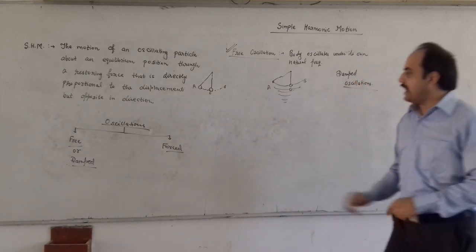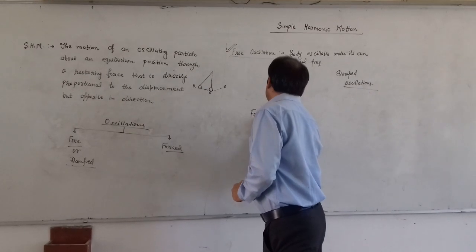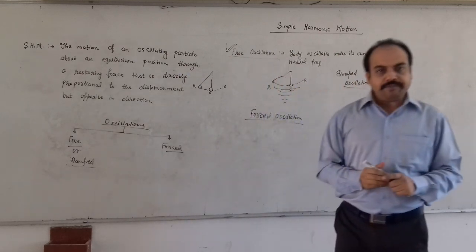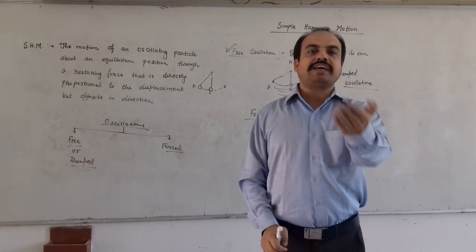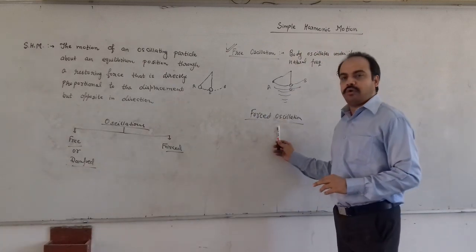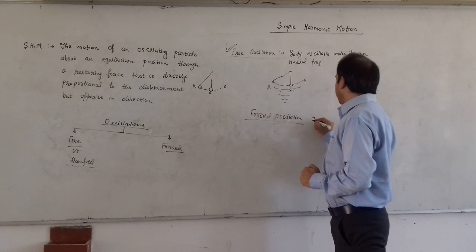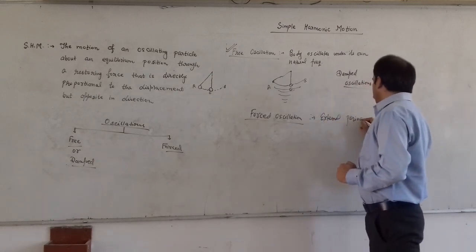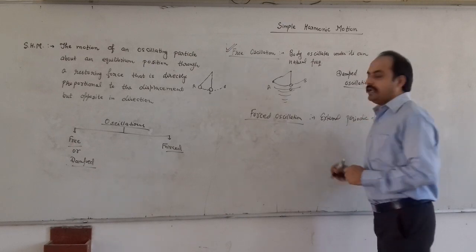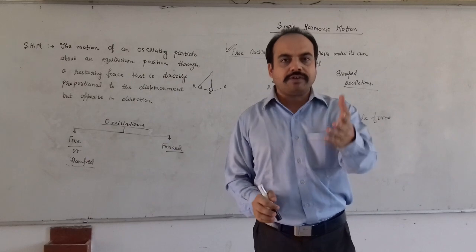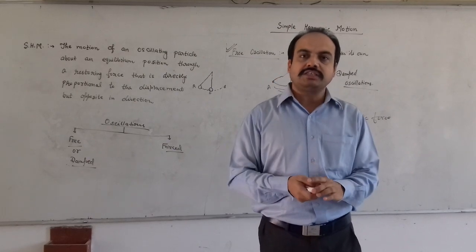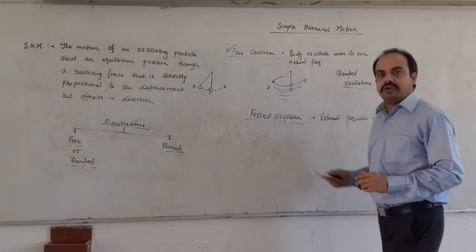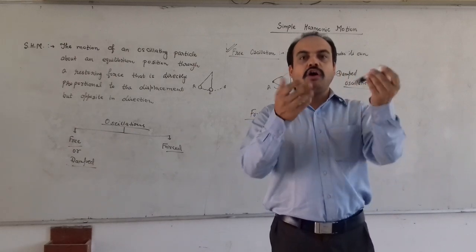The second type of oscillations are forced oscillations. If the body oscillates under some periodic external force, then that type of oscillations are known as forced oscillations — there is one external periodic force. In the beginning the body oscillates with its natural frequency, but the natural oscillations die out very soon and the body starts oscillating under this periodic external force. We see this type of oscillations in our wall clock with pendulums.